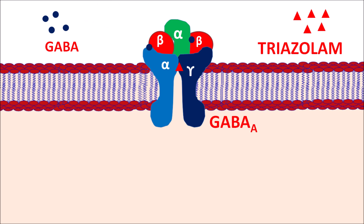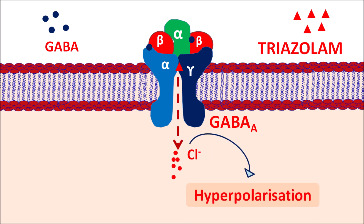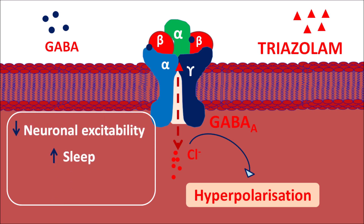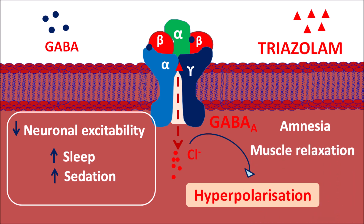When GABA binds to these GABA receptors, it opens the chloride channels, so chloride enters the cell and produces hyperpolarization. Since chloride has a negative charge, the cells become hyperpolarized, resulting in an inhibitory response. This hyperpolarization reduces neuronal excitability within the CNS, which increases the induction of sleep and sedation. Along with sleep and sedation, trizolam can also produce some loss of memory, increasing amnesia, and it can increase muscular relaxation which may result in some ataxia. In this way, trizolam acts as a positive allosteric modulator on GABA-A receptors.